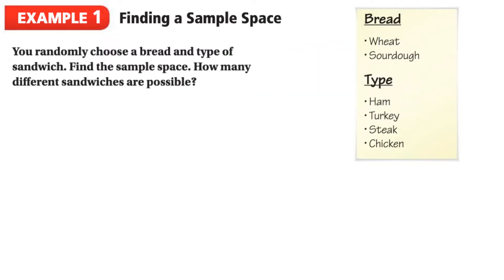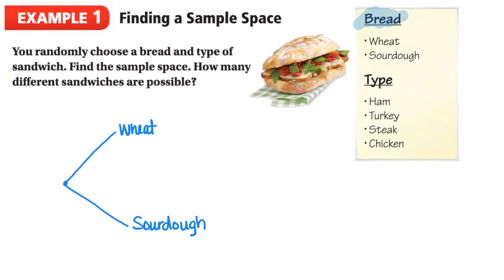In our first example, we're going to find the sample space, and we'll do this by using a tree diagram. Here's a menu and different types of sandwiches, and the question says, you randomly choose a bread and type of sandwich, find the sample space. How many different sandwiches are possible? If we think of our sandwich, the first thing we need is bread, and we can either have wheat or sourdough. So from this point, we are going to make two branches. One for wheat, and the other for sourdough.